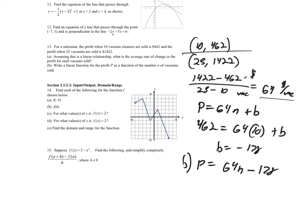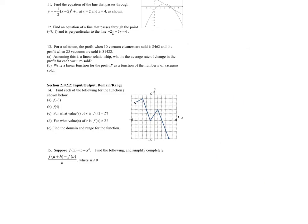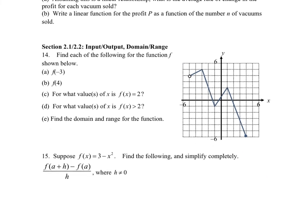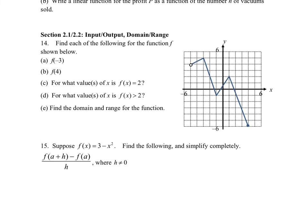For number fourteen, we read values from a graph. For part a, f(negative 3): find the y-value when x = negative 3, which gives positive 5. For part b, f(4): the y-value when x = 4 is negative 6.